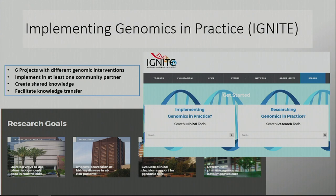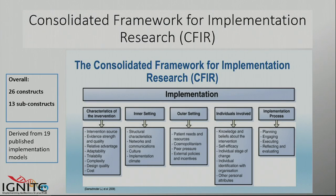What I'm going to talk about now is an example. In IGNITE — the Implementing Genomics in Practice network — we used a model to help guide network interactions. That model was CFIR. We had six projects in this network, each with a very different genomic medicine intervention: three pharmacogenetic trials, ours which was a family history trial, Mount Sinai's disease risk assessment, and University of Maryland's diagnostic for genetic causes of disease. We settled on CFIR — the Consolidated Framework for Implementation Research.